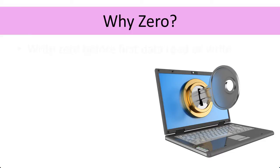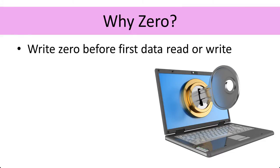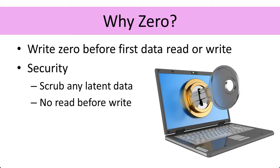Why do we do it? Well, security. We zero the data that was latent on the disk before the virtual machine gets access to it. So before the VM can read or write the block that came to us from the storage array, we make sure that the data underneath is clean, and that's what the zeroing is all about. It's there to scrub the latent data.